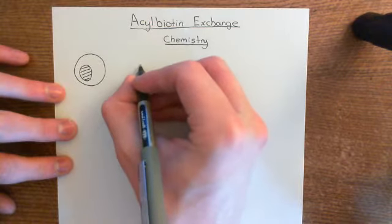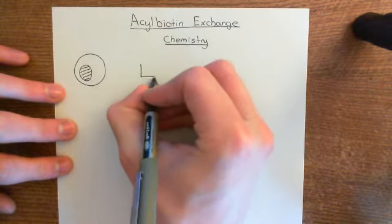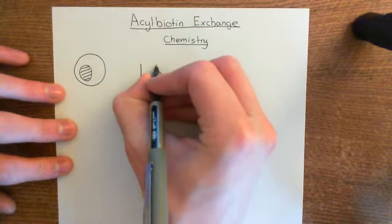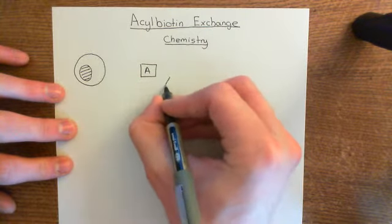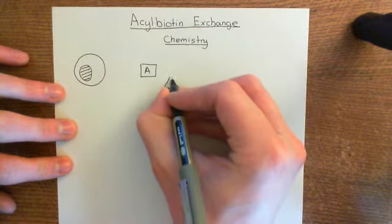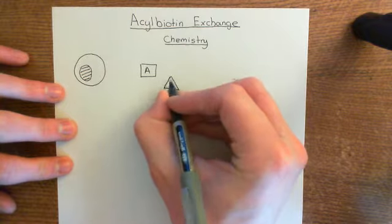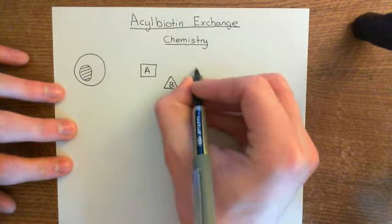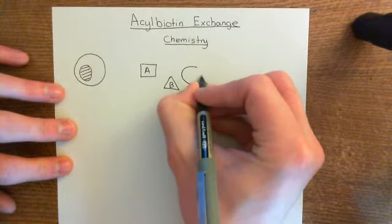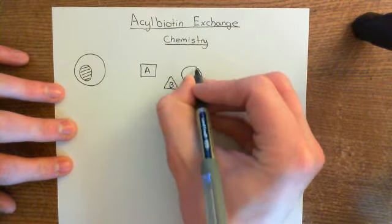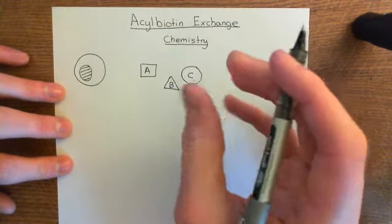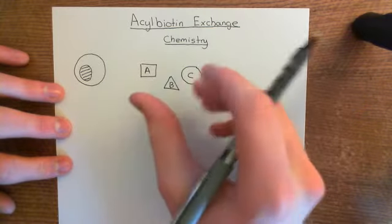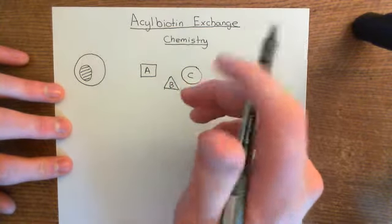Now we've got the proteins. Let's say that we have our sample of proteins here: protein A, a triangle-shaped protein B, and protein C with a circle. Of course, we'll have far more proteins than just these three, but this will do to illustrate the point.